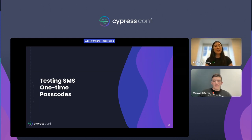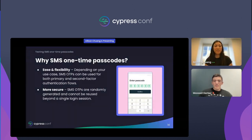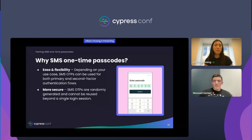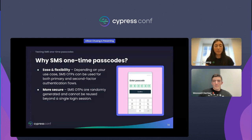Moving on to testing SMS one-time passcodes. SMS one-time passcodes is another great form of passwordless authentication — you've likely gone through this flow before in your mobile apps. The app texts you a passcode and you type it in, which is often autofilled, in order to authenticate.